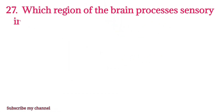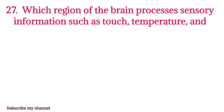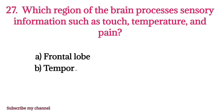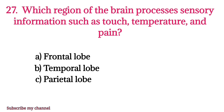MCQ number twenty-seven: Which region of the brain processes sensory information such as touch, temperature, and pain? Option A: frontal lobe, option B: temporal lobe, option C: parietal lobe, option D: occipital lobe. The right option is option C.